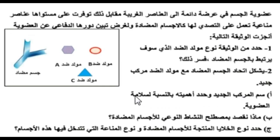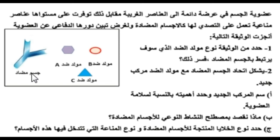يشكل اتحاد الجسم المضاد مع مولد الضد مركباً جديداً. المركب الجديد هو عبارة عن اتحاد جسم مضاد مع مولد الضد، ويشكلان معاً معقداً مناعياً. أهميته بالنسبة لسلامة العضوية أن الجسم المضاد عندما يثبت على مولد الضد، سيعدله ويبطل مفعوله.